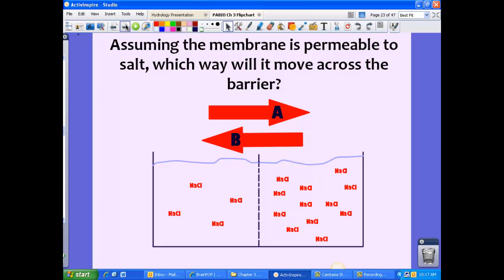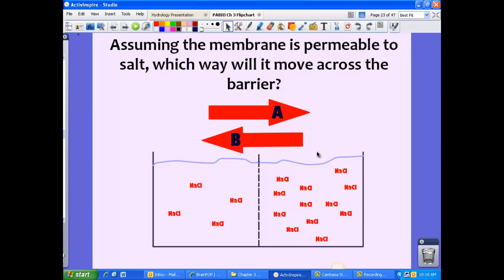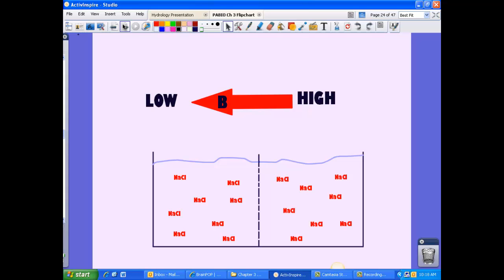So taking a look at this picture, assuming the membrane is permeable to salt, which way will it move across the barrier? Think about this. Which one has high concentration and which one has low concentration? We always want to move from high to low. So which way is it going to flow? If you said B, you are correct. The sodium or the salt wants to move from high to low. Since there was more salt on the right, it wants to move to the left. So that would be B. It's moving from a high concentration to a low concentration.